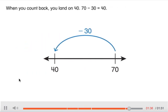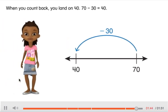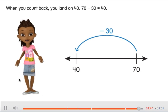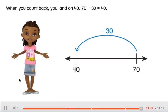When you count back, you land on 40. 70 minus 30 equals 40. Now you know how to subtract tens using an open number line.